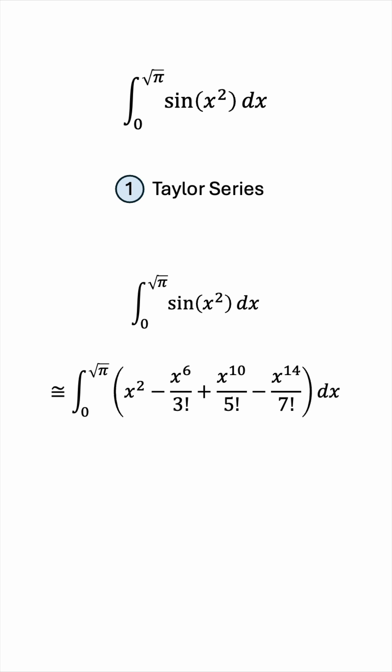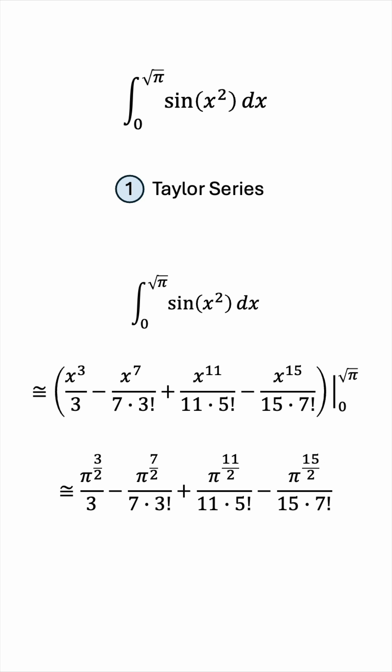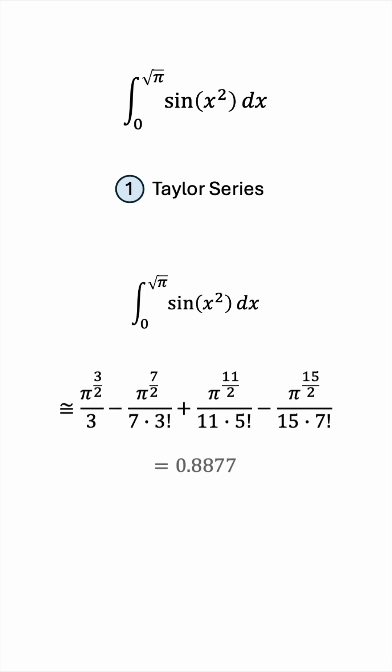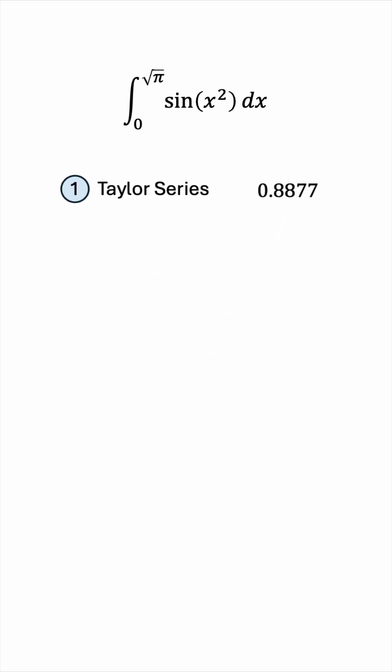Integrating this polynomial is of course very easy. And we'll plug in the bounds 0 and root pi. The result will be the following, and this evaluates to approximately 0.8877. So that's the result using Taylor series.